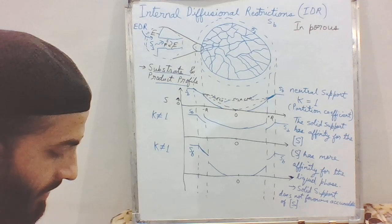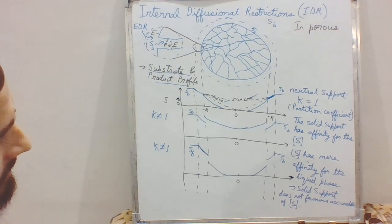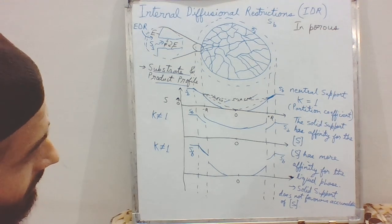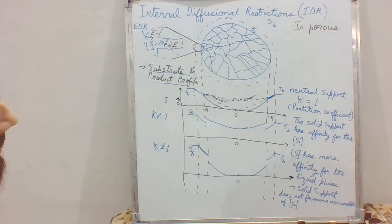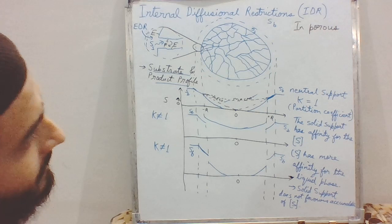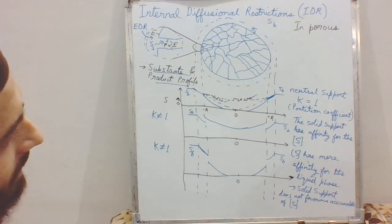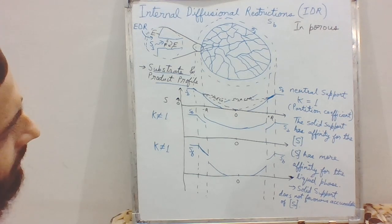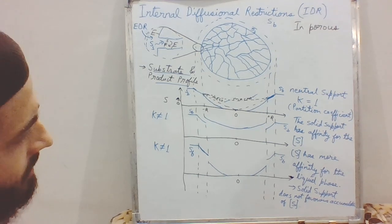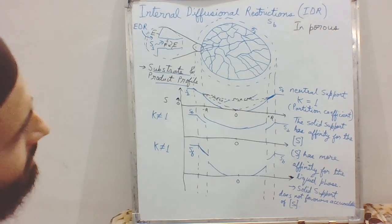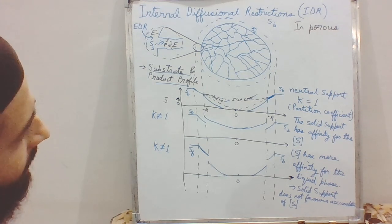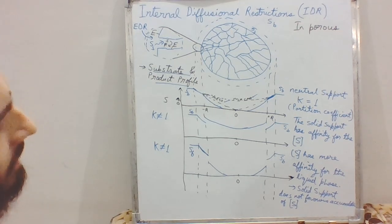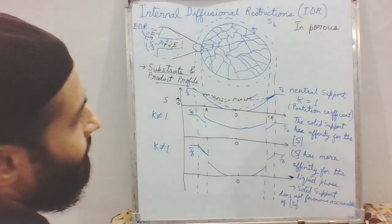We will now see how to study the kinetics. Since the conditions at every point within the support are different, we cannot analyze each and every enzyme immobilized within the support. What we can observe is the overall effect of immobilization. Equations will be derived for different geometries, as geometry affects internal diffusion restrictions. We will see what factors influence internal diffusion restrictions in our upcoming lectures. Thank you, keep watching.